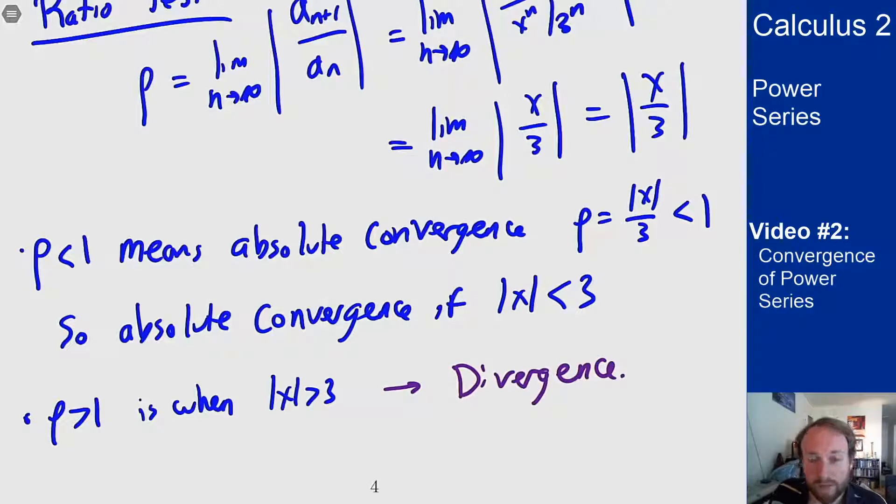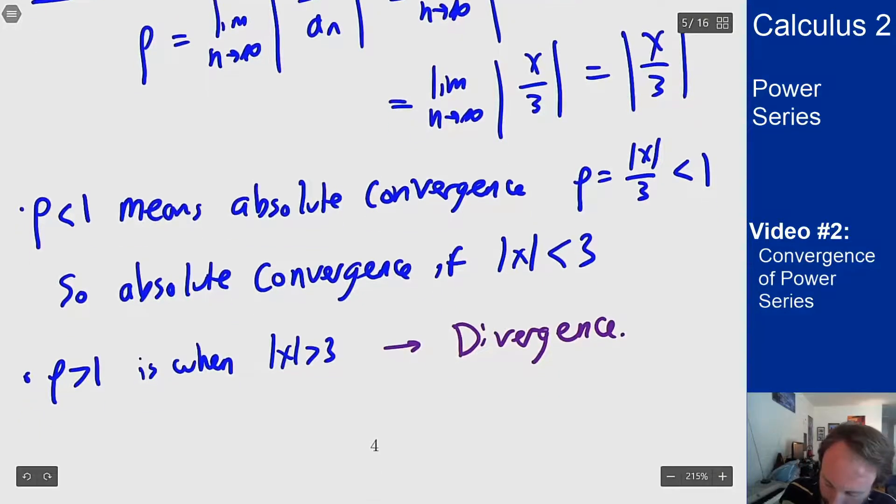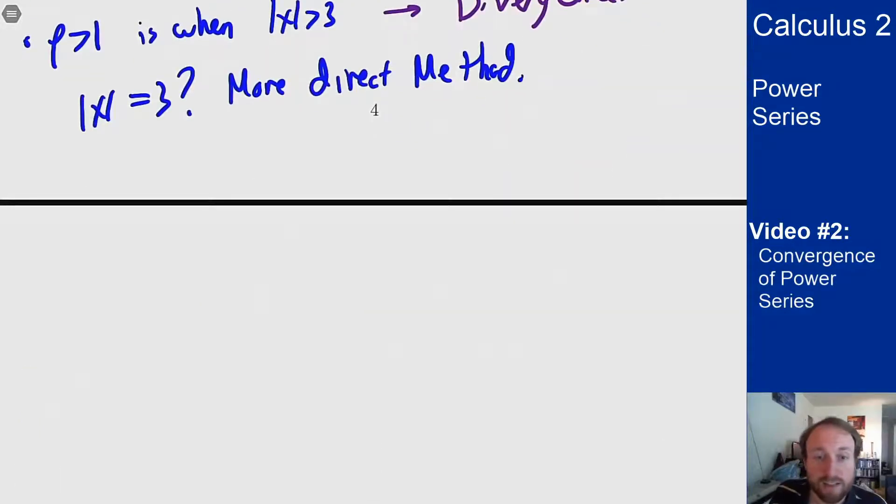So it only has to do with the endpoints here where x is 3 and x is minus 3, and we'll talk about strategies going forward but the idea is I have to check those two individually. The ratio test does not tell me whether or not that converges so I must use a more direct method to figure it out. This means I need to plug in these values and see what my series comes to.